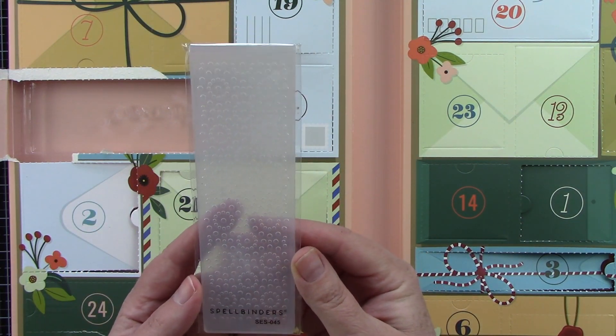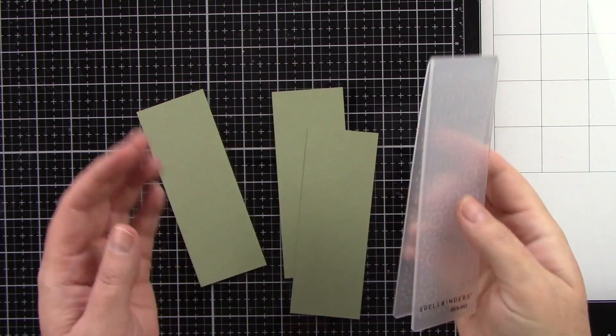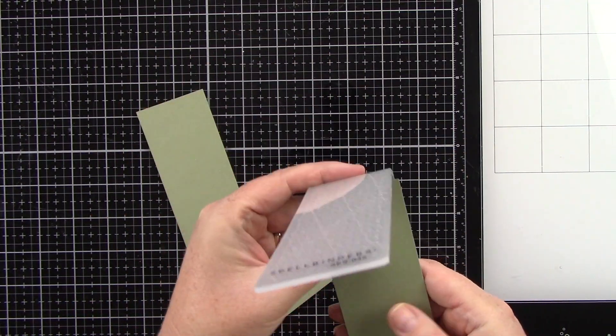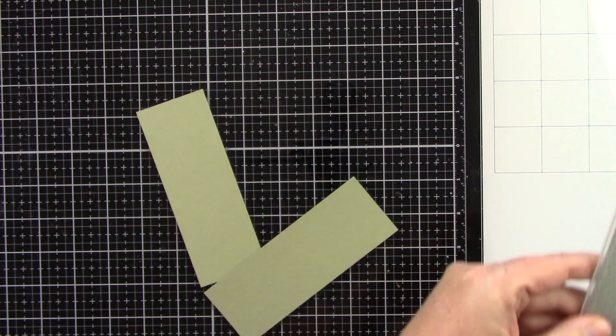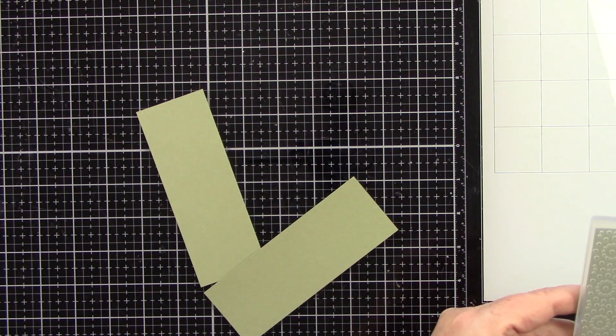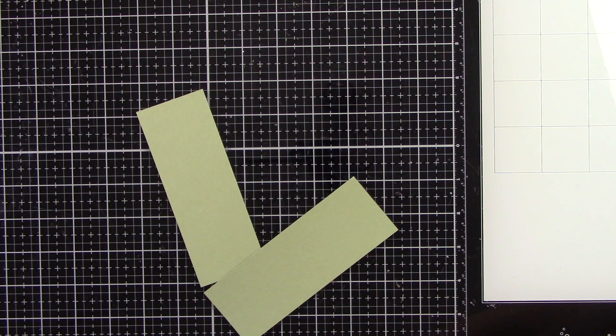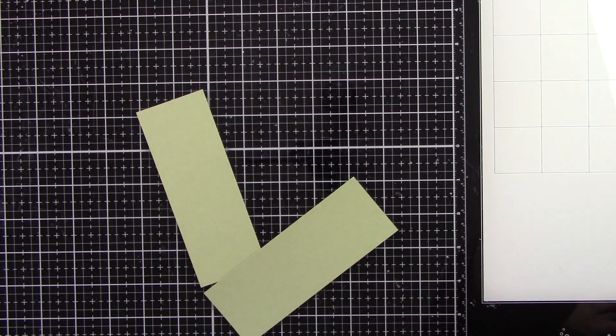So I have die cut some cardstock just to a workable size. I am gonna trim these pieces of dark green cardstock, they will be one and a quarter inches by four inches because we're gonna create an A2 size card.